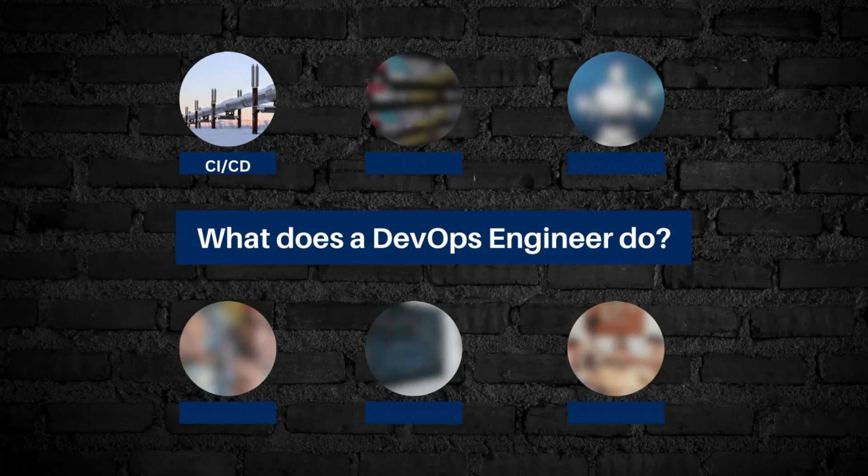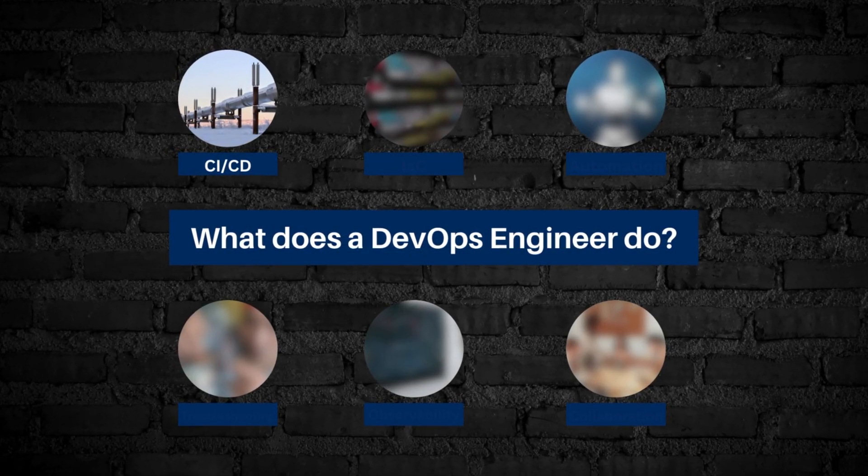The first thing which a DevOps engineer does day in, day out is building CI/CD pipelines. The full form is continuous integration and continuous deployment, but what does that mean? Basically, it's all about making the software delivery process much more efficient.